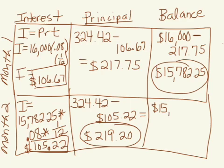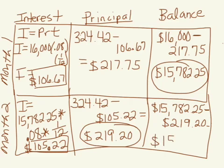The first month, your balance on your loan was $15,782.25. You have now had $219.20 go towards your loan. Your new balance at the end of the second month is $15,563.05.